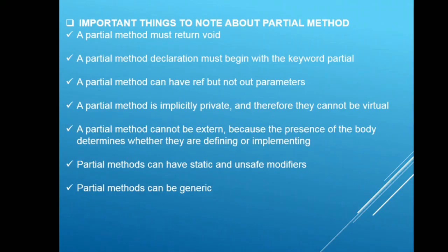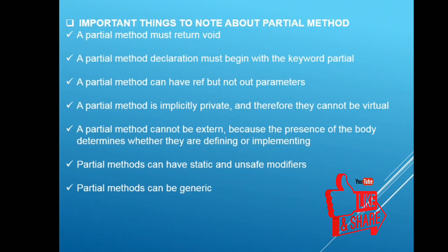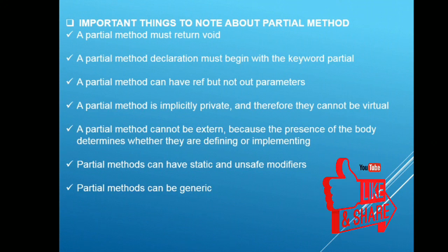Important things to note about partial methods: a partial method must return void. A partial method declaration must begin with the partial keyword. Such methods can have ref but cannot have out parameters. Such methods are implicitly private, therefore they cannot be virtual. A method cannot be external because the presence of a body determines whether it is declaring or defining. Partial methods can have static and unsafe modifiers. Partial methods can be generic.